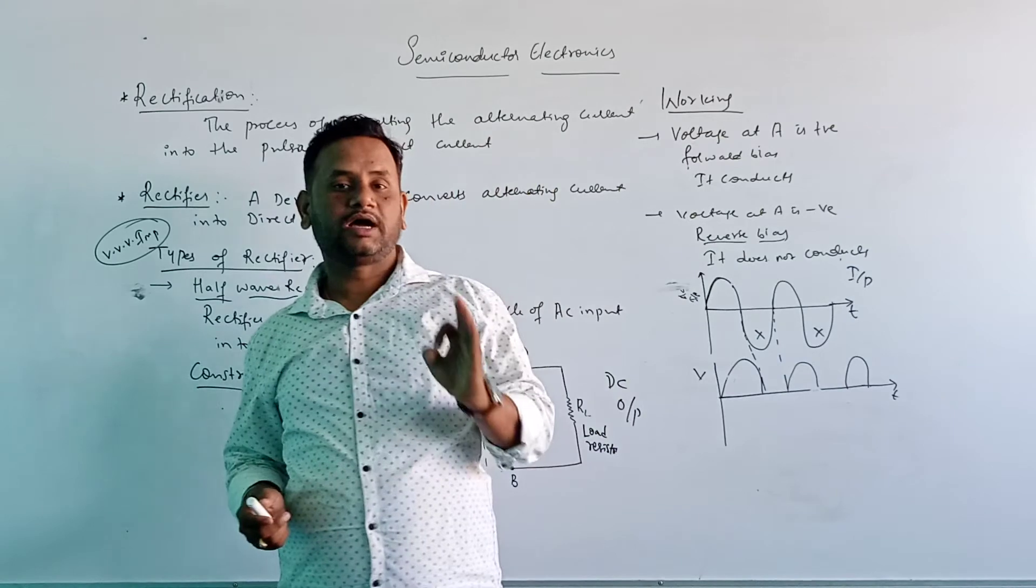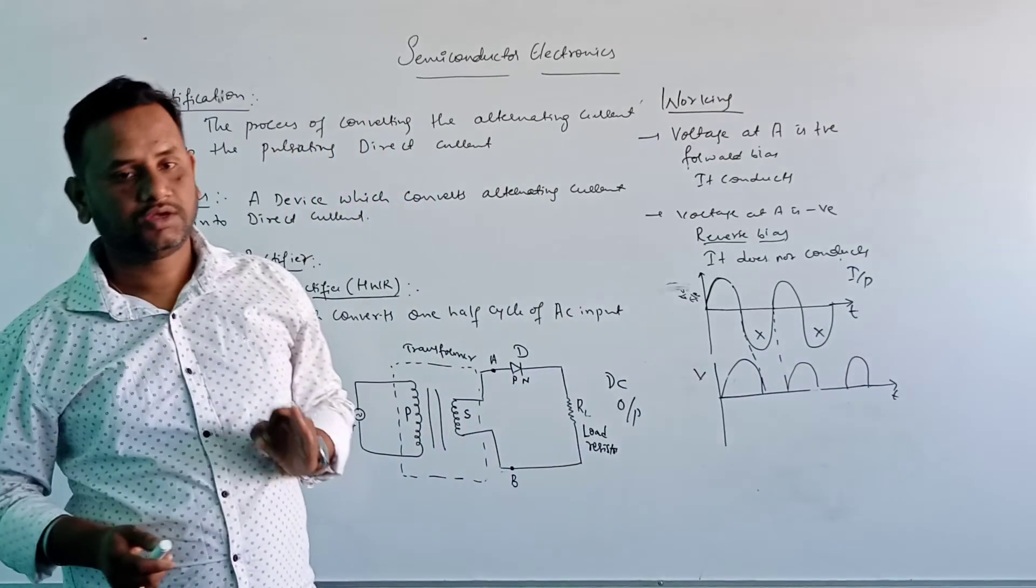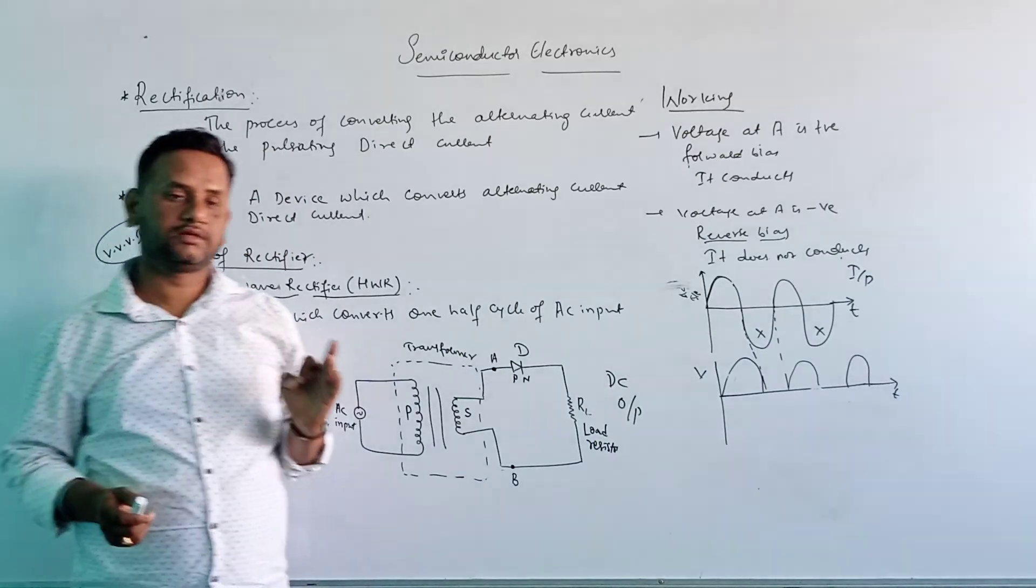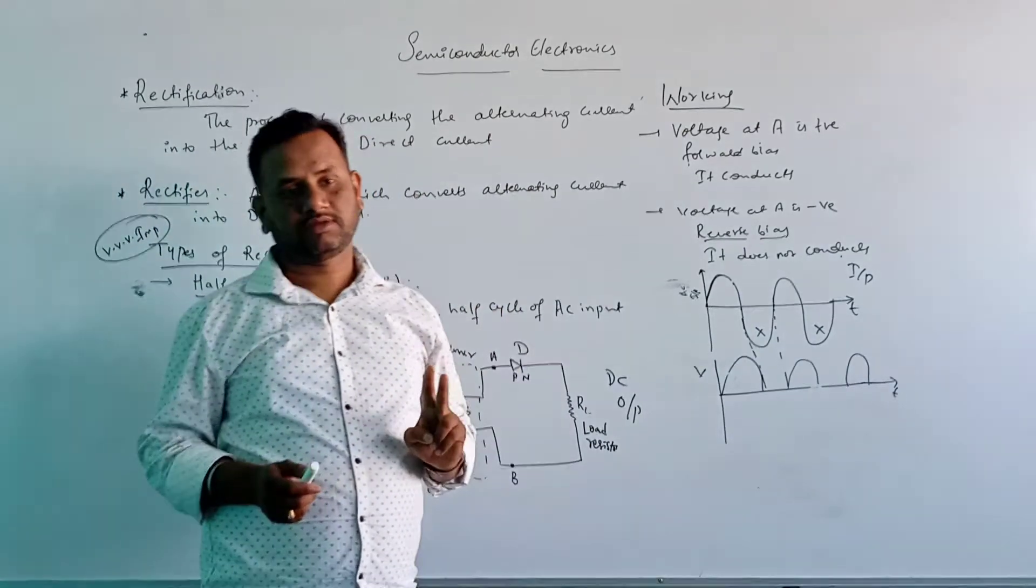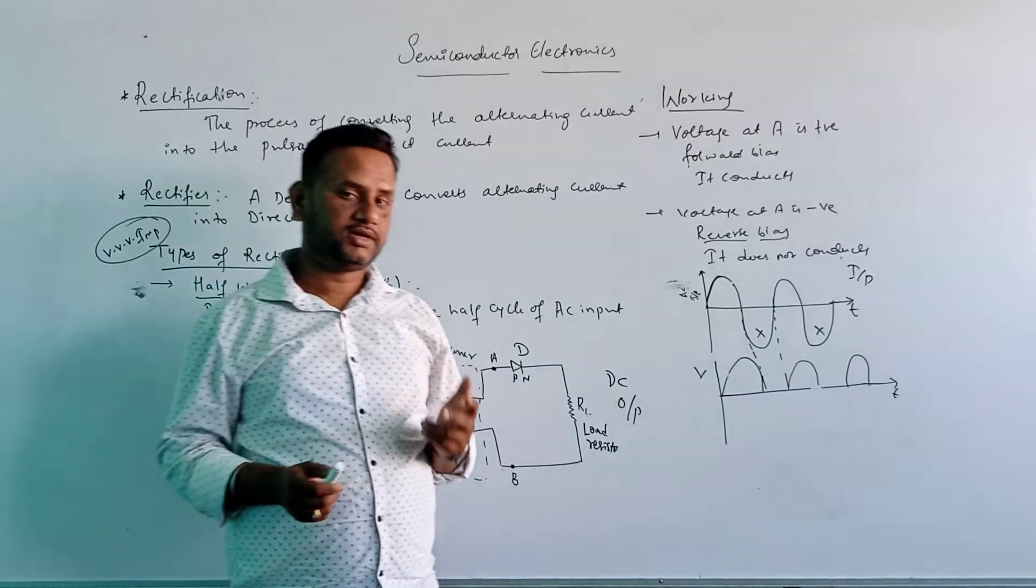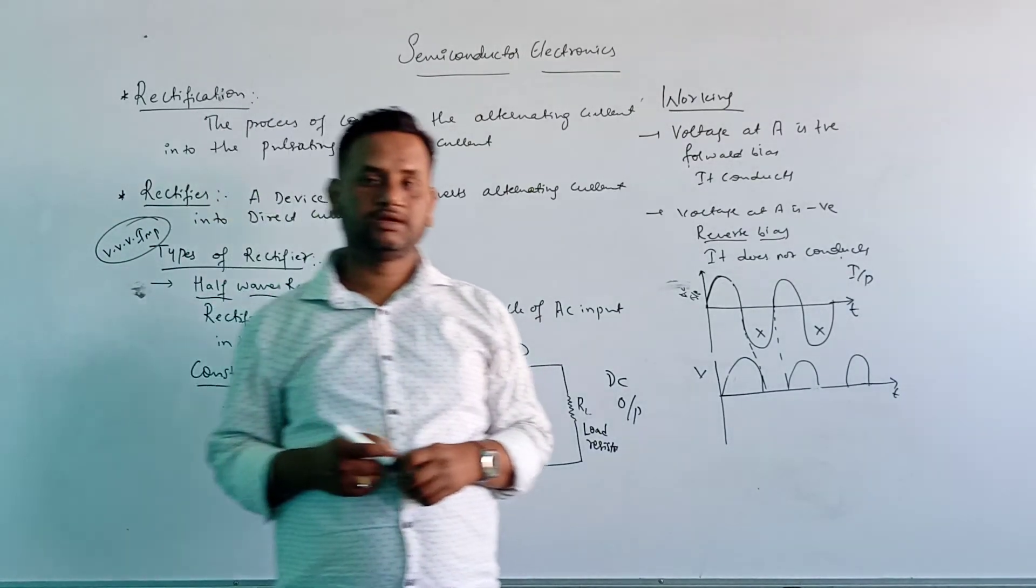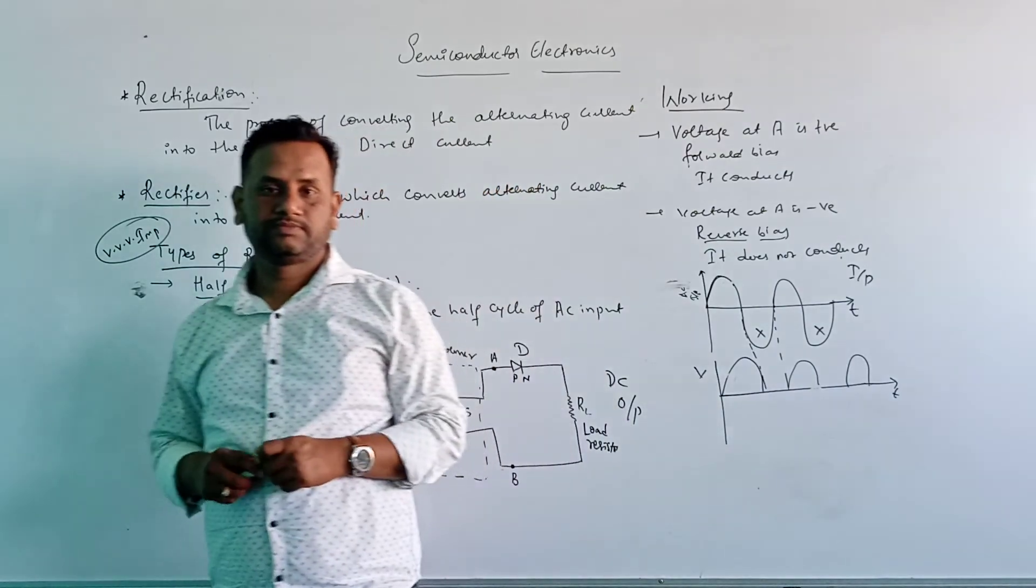So for both the half cycles, we will get the output here. So in that full-wave rectifier, we are using two diodes. So that I will explain in the next class. So today we will stop here. We will continue in the next class. Thank you.